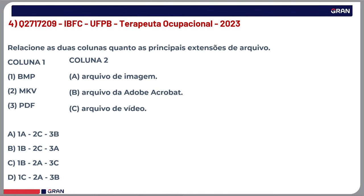Tivemos 7 votos — a letra A foi a mais escolhida, 71%. Gabarito letra A mesmo. Arquivo de imagem é BMP — o bitmap. MKV é vídeo, esse 'V' é de vídeo, é um formato de vídeo. E PDF é Adobe Acrobat, letra B. Esses são os formatos de arquivos.